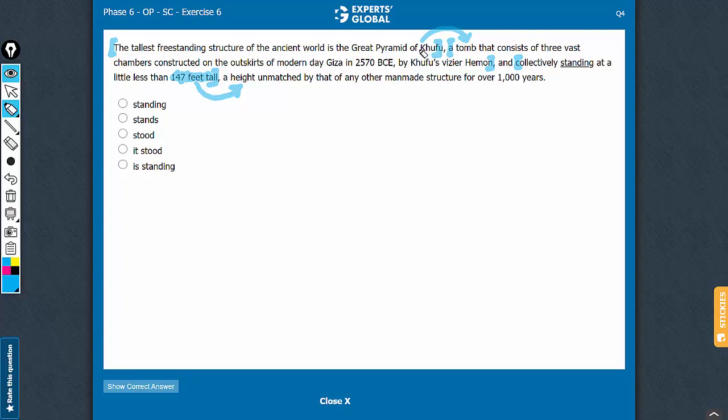Since we are talking about the qualities of a noun, these two parts of the sentence need to be noun modifiers. So, we need something that can directly modify Khufu here.